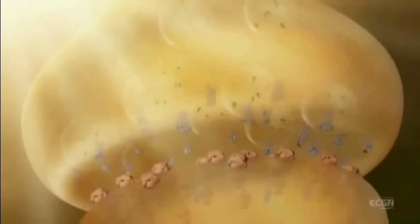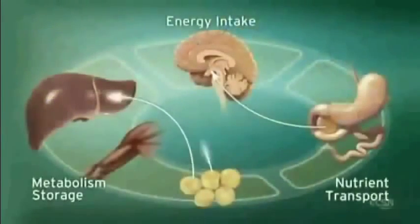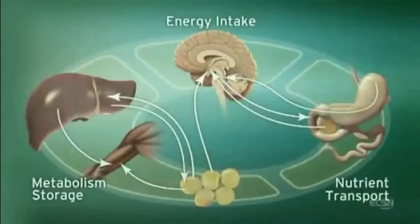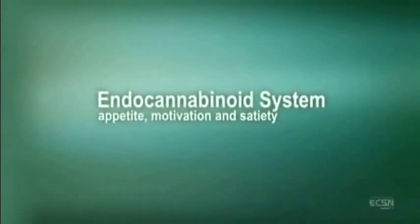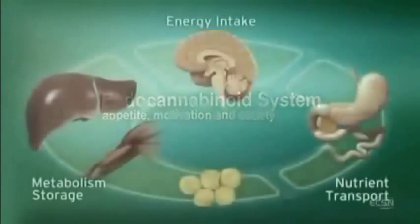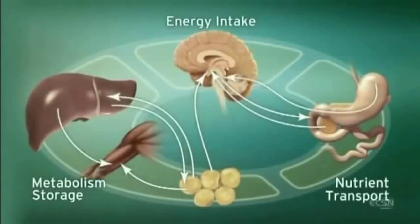Endocannabinoids are subsequently taken back into the cell and enzymatically degraded. In addition to acting as neural messengers, endocannabinoids mediate paracrine and autocrine signaling in adipocytes, hepatocytes, and other cells.